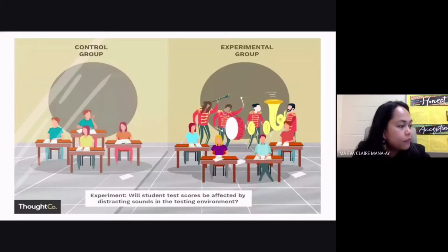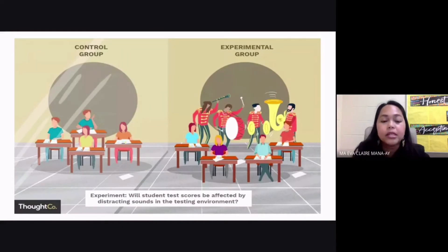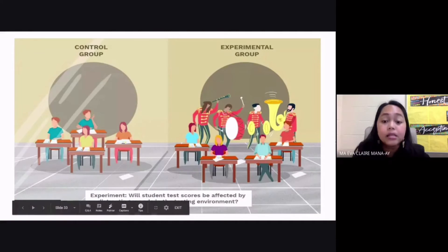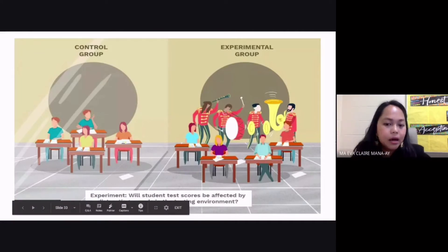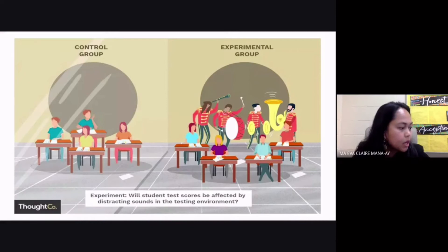Now, your experiment is written at the bottom. Your testable question is: Will student test scores be affected by distracting sounds in the testing environment? Who can give us the independent variable and the dependent variable in that experiment?